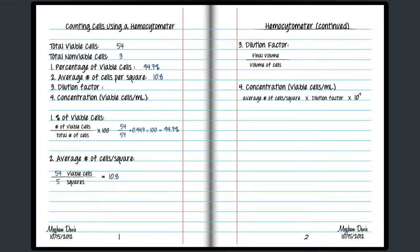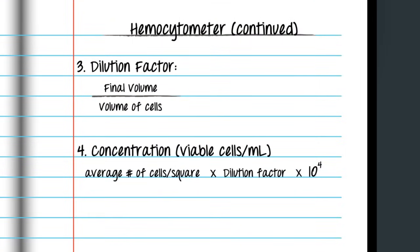Now let's calculate the dilution factor. The dilution equals the final volume divided by the volume of cells. Our final volume is 200 microliters because we started with 100 microliters of cells and added another 100 microliters of trypan blue. 200 divided by 100 is 2. Therefore, the dilution factor is 2.